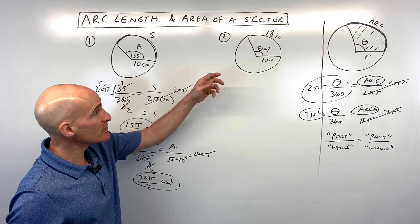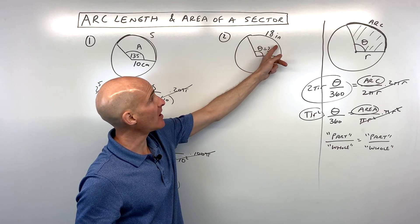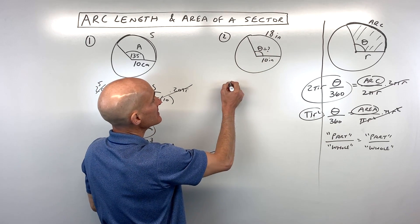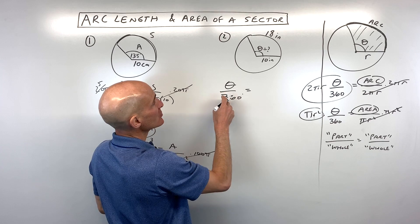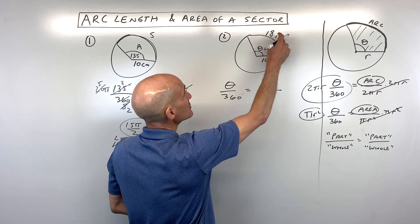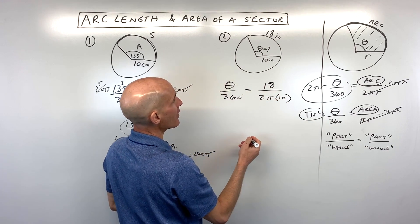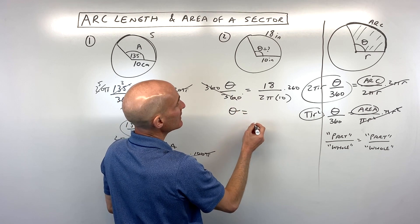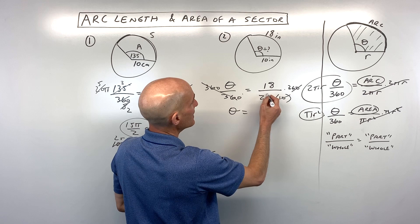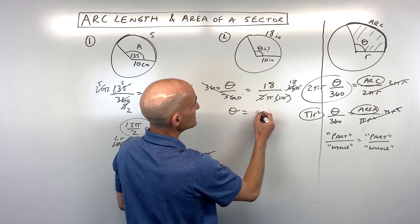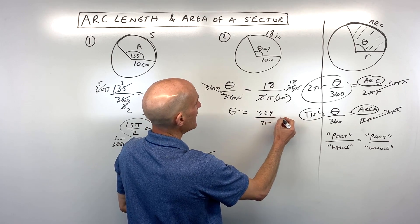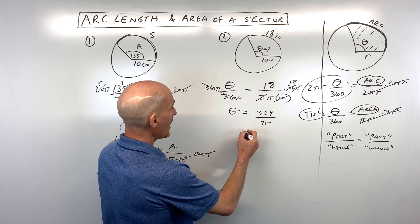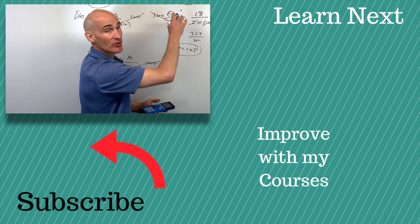For number two, this one is a little more challenging because we're solving for the central angle. They give us the arc length. Since we're working with arc length, we use the proportion: theta is to 360 as arc length 18 is to the whole circumference 2πr. We multiply both sides by 360 to get theta by itself. Reducing: 10 goes into 360 thirty-six times, and we get 18 times 18, which is 324 divided by π — which is about 103 degrees for the central angle.